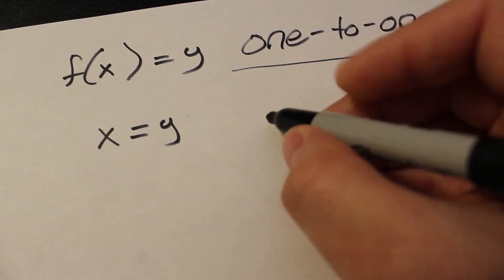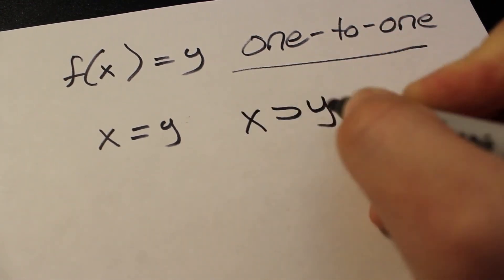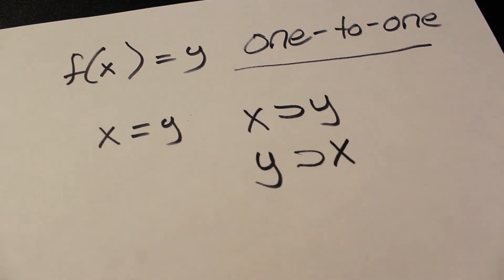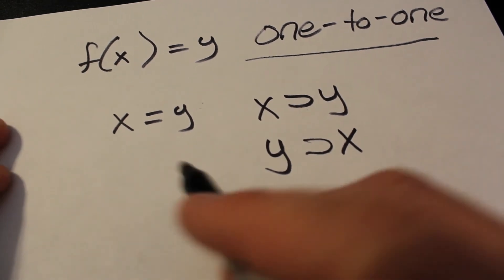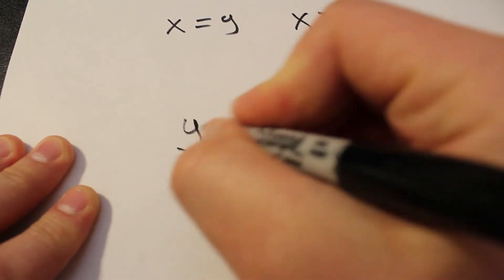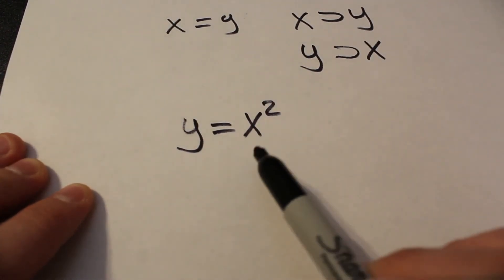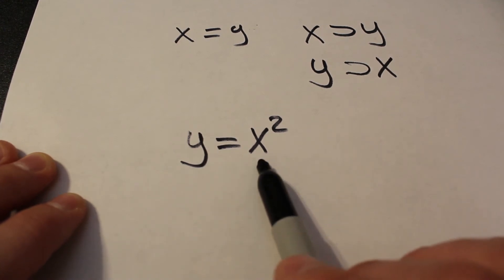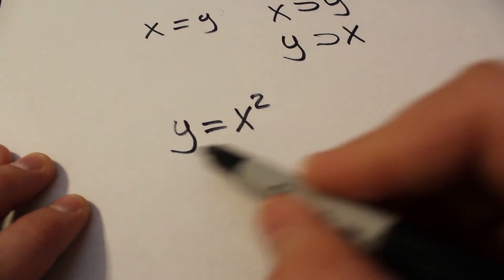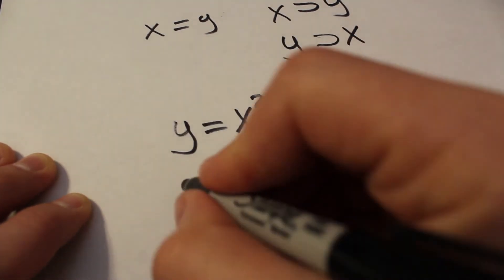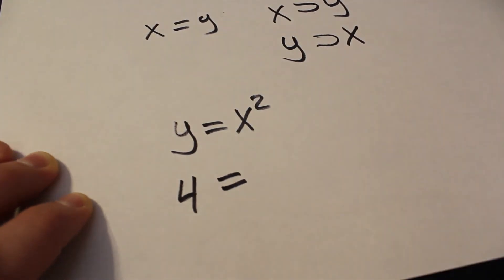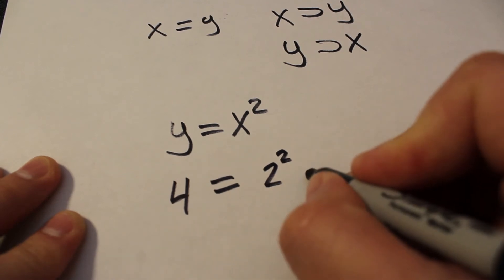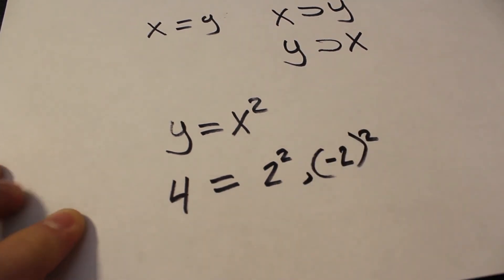Equations tell you the converse as well — if I have x, it means something about y, and if I have y, it tells me something about x. For example, consider y equals x squared. If x is 1, y is 1; if x is 2, y is 4; if x is negative 2, y is also 4. Now suppose y equals 4 — what does x have to be? Unfortunately you don't get one answer: x could be 2, because 2 squared is 4, but it could also be negative 2, because negative 2 squared is also 4. Because of this, this function is not one-to-one.